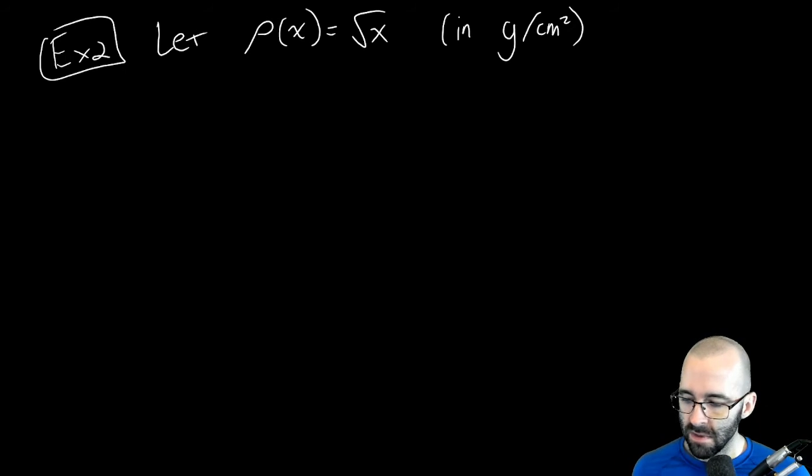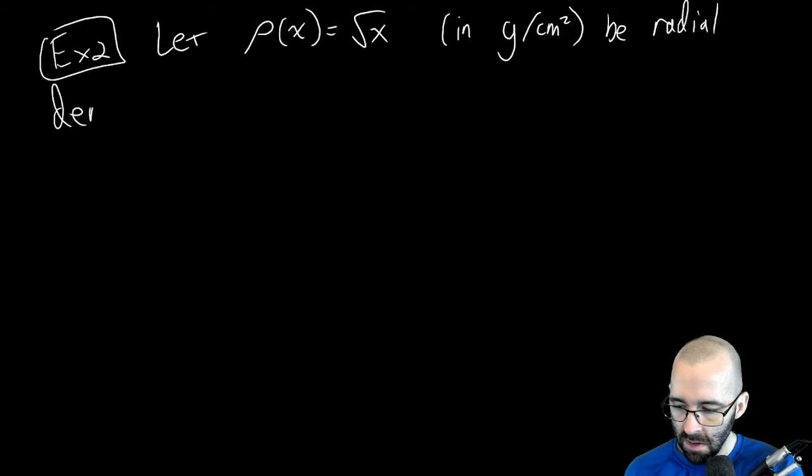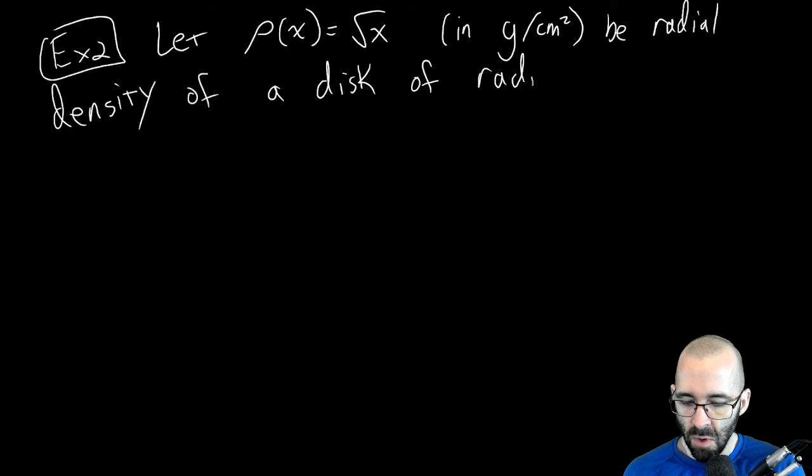Example two: Let ρ(x) be the square root of x in grams per centimeters squared. Again, look at our density function - we're talking about two-dimensional objects. Our density function is now related to area.